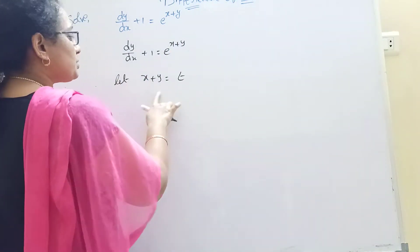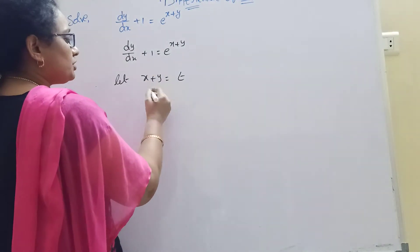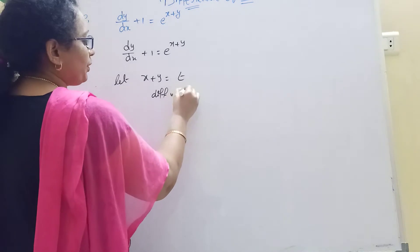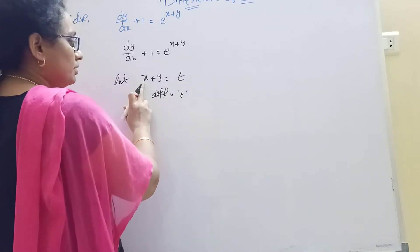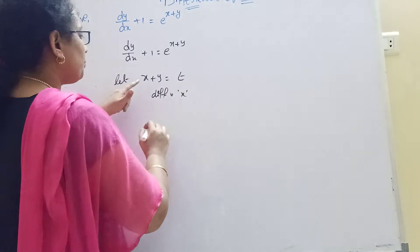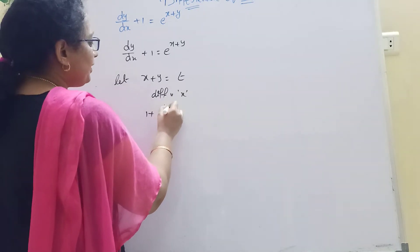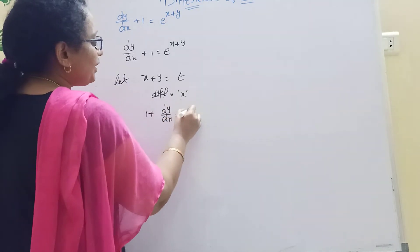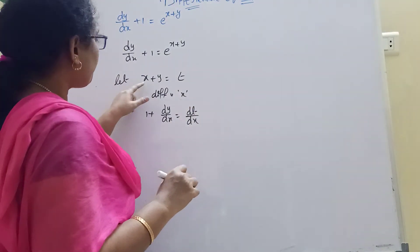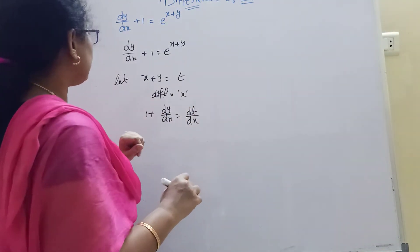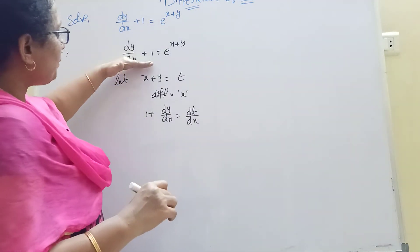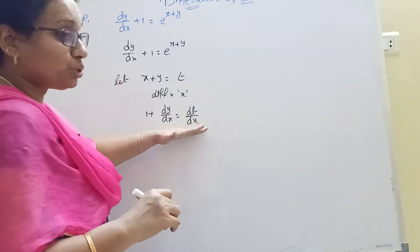Now x plus y equals t. Differentiating with respect to x, we get 1 plus dy/dx equal to dt/dx.